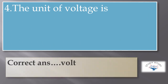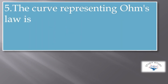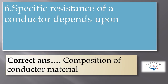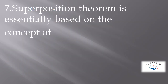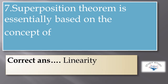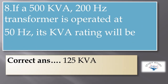The correct answer is volt. The curve representing Ohm's law is linear. Specific resistance of a conductor depends upon the composition of conductor material. Next, superposition theorem is essentially based on the concept of linearity.